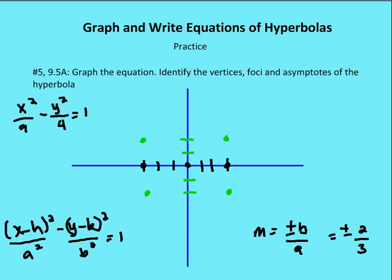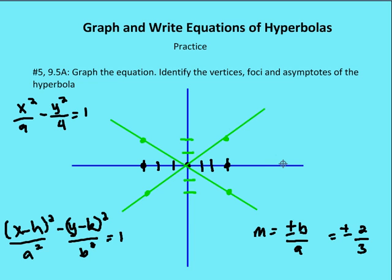Now I have all the points I need to create my asymptotes, so I'm going to create my asymptote through these two points and through the center. The asymptote is going to go through the center of the hyperbola. Now I have the framework for my hyperbola, so I'm going to go ahead and draw my hyperbola — let's make it in black. The branches will never touch the asymptotes, so it looks something like this.